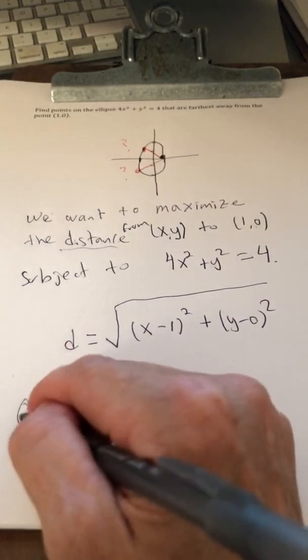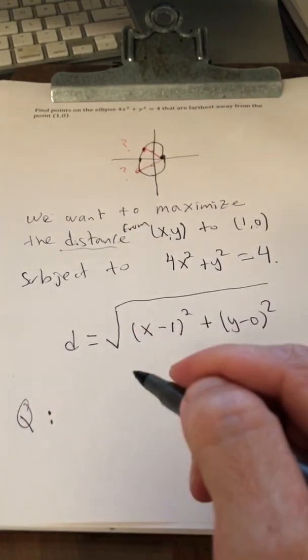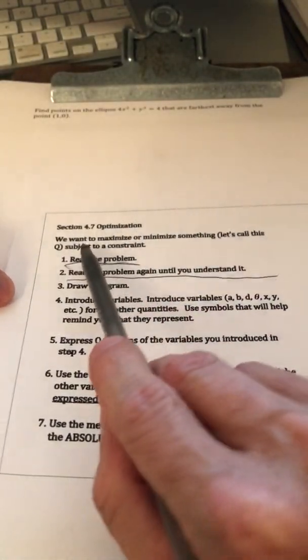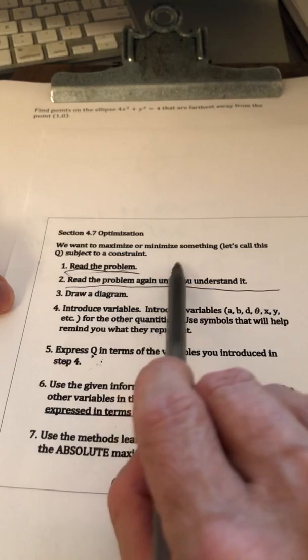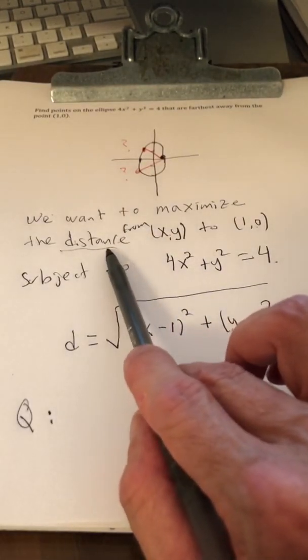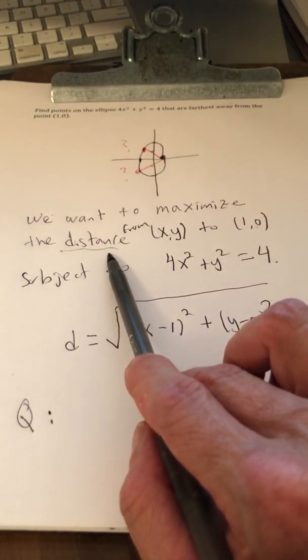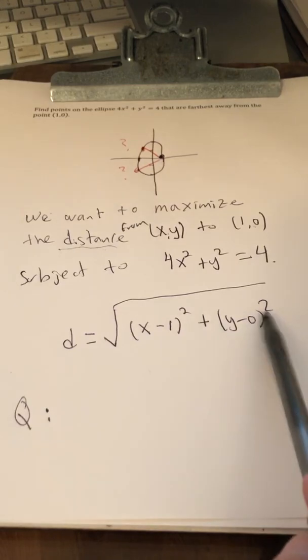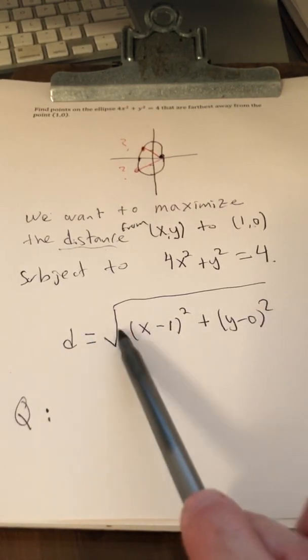So our Q, remember our game plan for optimization, we want to maximize or minimize something that's called Q. I know we're trying to maximize the distance, but what you should realize in this case is that if you maximize the radicand, you maximize this distance.